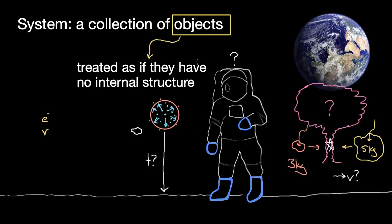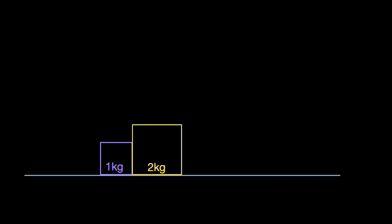The idea of a system and an object is important in physics — not just conceptually, but it can actually help you in problem solving. Say there are two boxes — too big and unwieldy to handle — so you're going to push them across a freshly waxed floor with negligible friction. You exert nine newtons of force on a one kilogram box, which pushes into a two kilogram box, and they move off to the right.